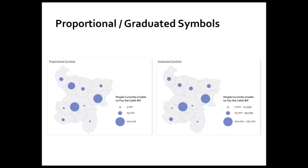You've seen this in class already. On the left I have proportional symbols, and on the right I have graduated symbols. They're the same kind of symbol — both circles. On the left I have people currently unable to pay the cable bill, and these symbols are sized in proportion to the original data values: I set a minimum size and then let the symbol get bigger proportionally to the actual data value. On the right, in contrast, I set three different symbol sizes, and then each one corresponds to a range of data values — basically a category. On the left it's a little bit hard to compare some of the mid and smaller size values, but you get a better sense of the true diversity of the underlying data. With graduated symbols on the right, it's easier to compare things because you have just a few set symbol sizes, and visually it's easy to pick out the low, medium, and high. So there are good reasons to use both of these methods with point symbology.